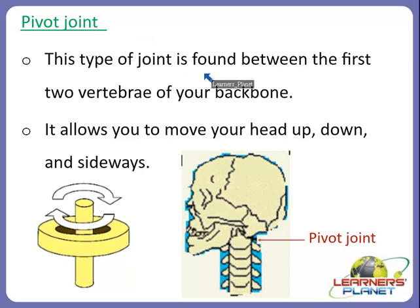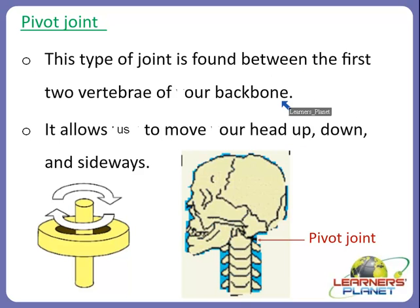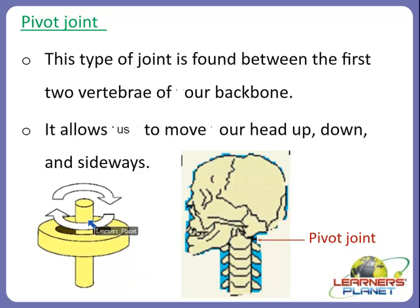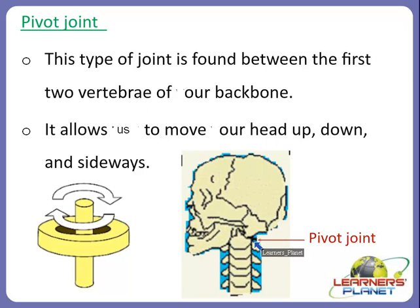The next type is the pivot joint. This type of joint is found between the first two vertebrae of the backbone. It allows us to move our head up, down, and sideways. You can follow the arrows in this picture to imagine how it rotates — the pivot joint is present between the first two vertebrae of our backbone, near the neck and skull.